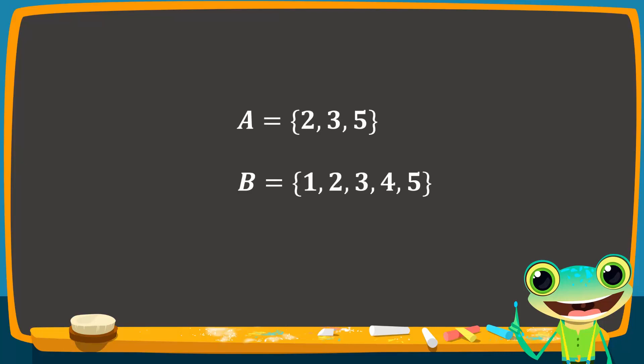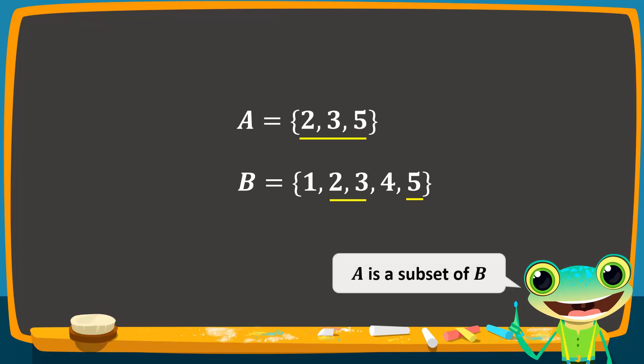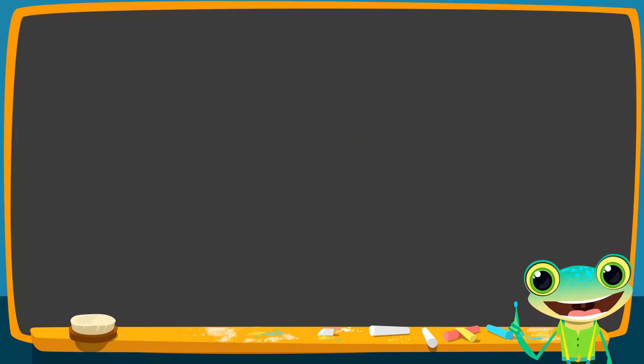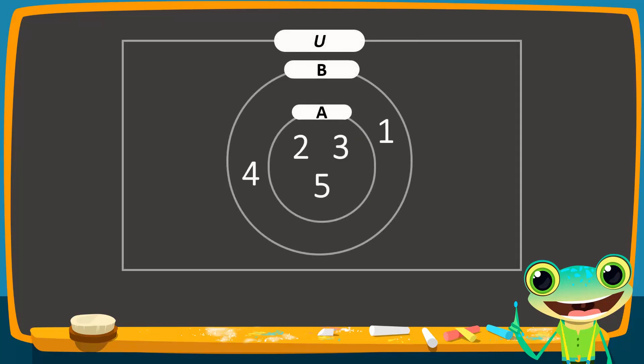Next, we look at the final scenario, where one set is a subset of the other. Set A contains the prime numbers 2, 3, and 5, while set B contains the numbers 1, 2, 3, 4, and 5. Since each element of set A is also in set B, set A is a subset of set B. On a Venn diagram, these sets are represented as two unequal circles, where the smaller circle represents set A and lies inside the bigger circle, which is set B.